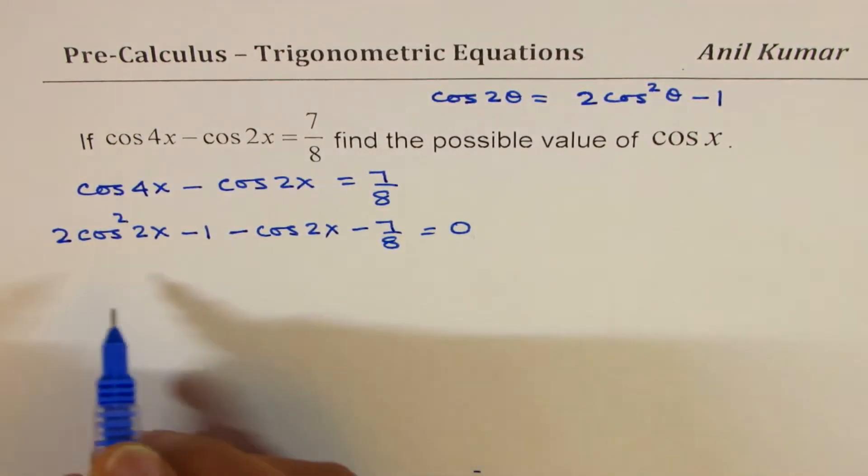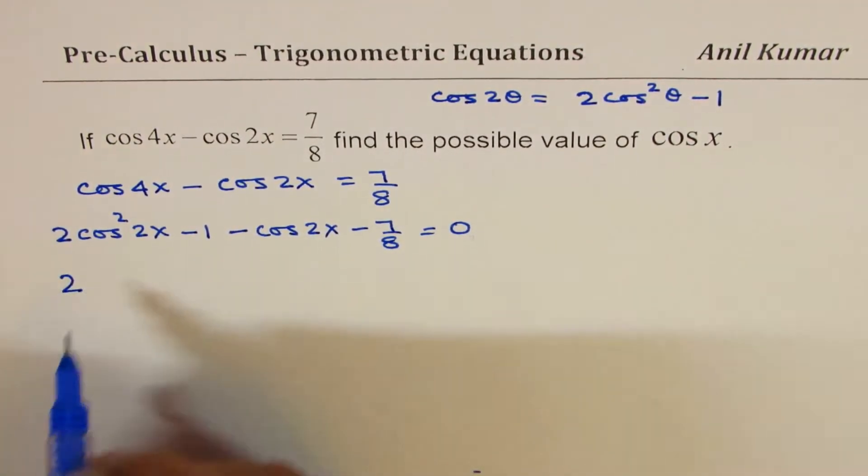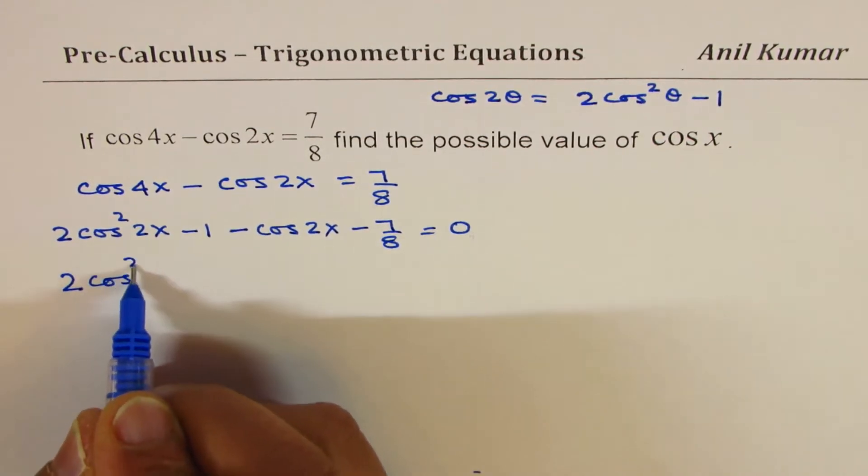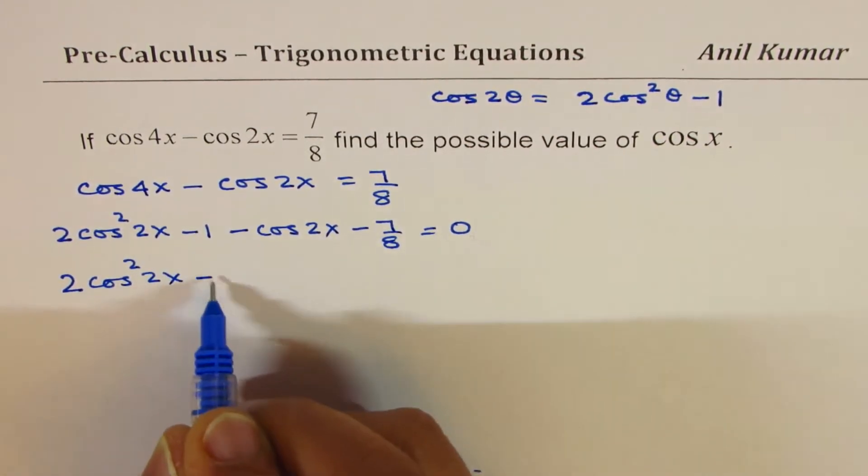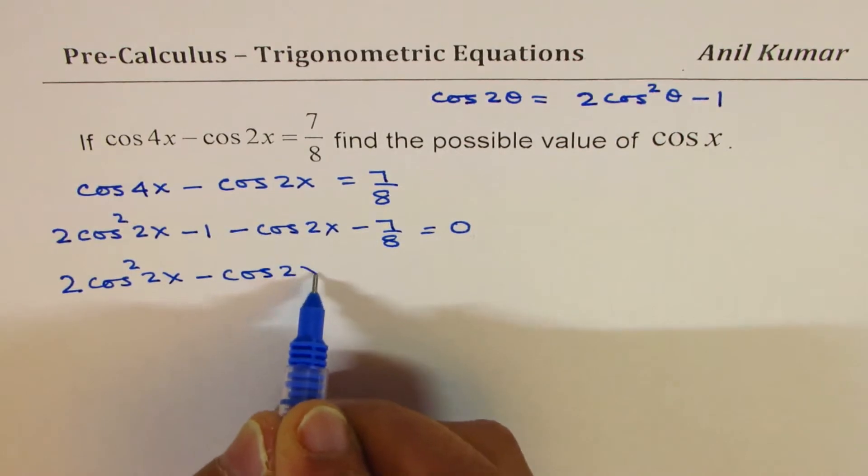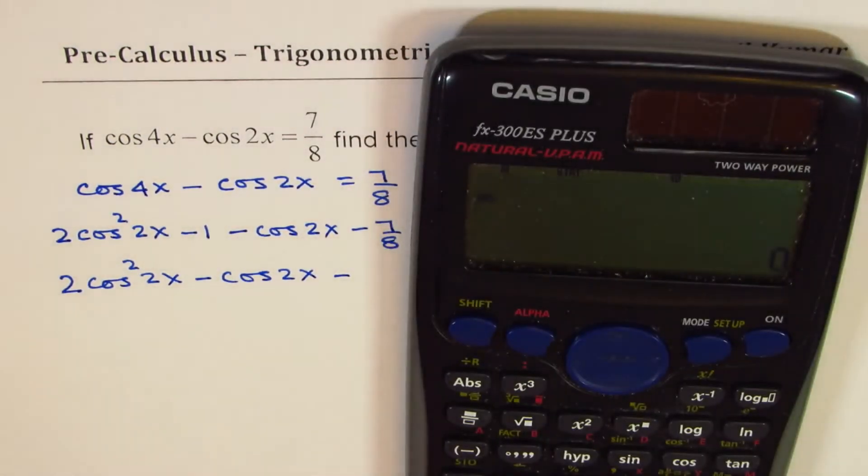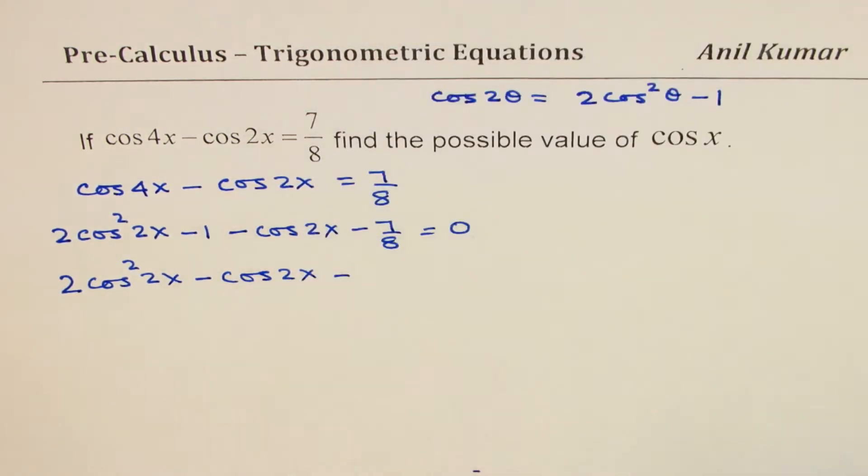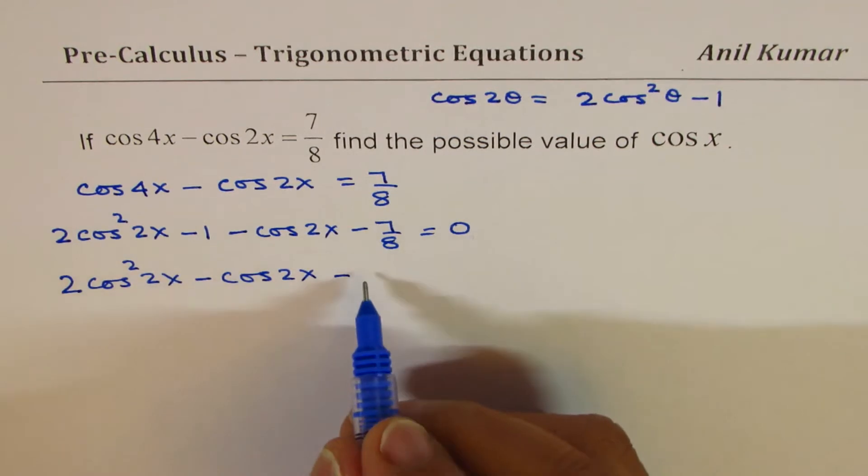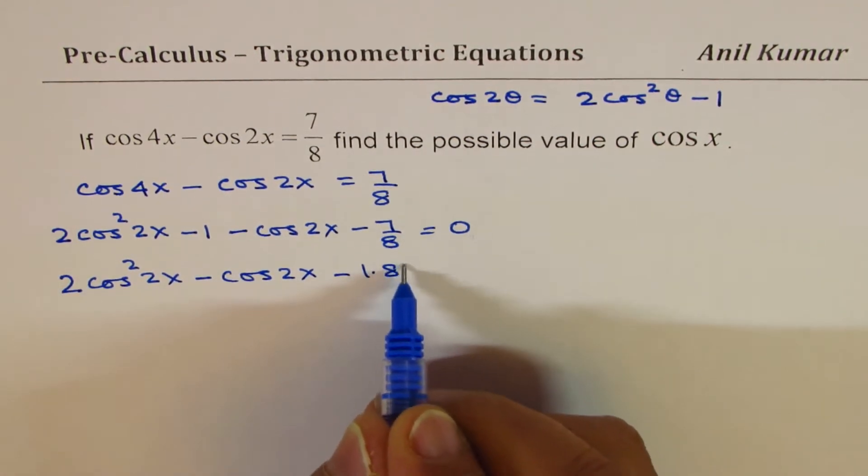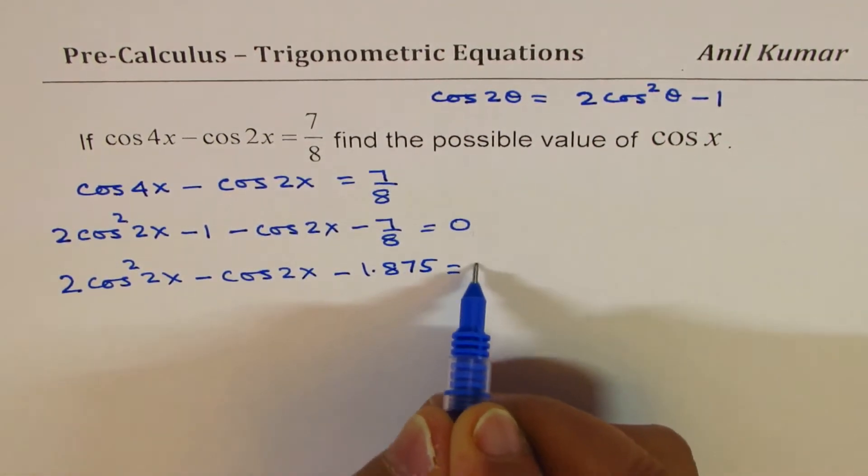Let's combine these terms now. We get 2 cos² 2x minus cos 2x minus, let's add 1 and 7 over 8. So 1 plus 7 divided by 8 equals 1.875. We can write this as minus 1.875 equals 0.